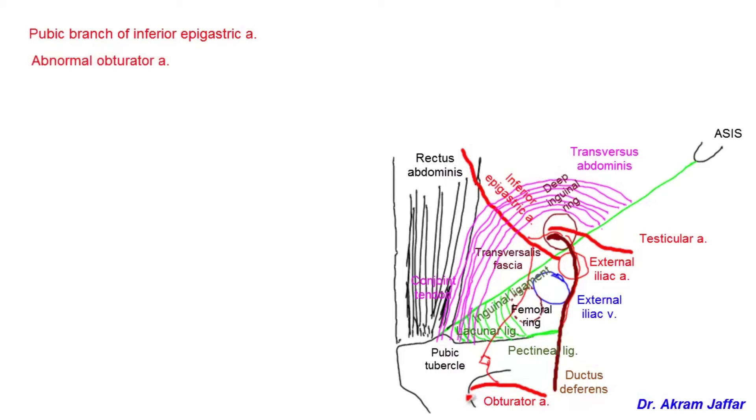It continues through the obturator foramen into the thigh. This large branch is called the abnormal obturator artery.